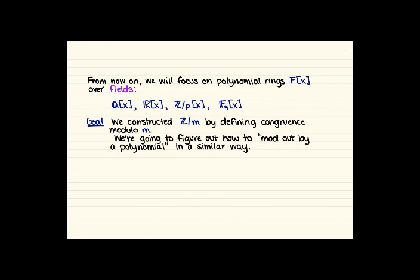We've introduced polynomial rings over rings in general, but from now on we're going to focus on polynomial rings F adjoin x over fields. In particular we'll be looking at Q adjoin x, R adjoin x, Z mod p adjoin x, and something called Fq adjoin x. We'll say what Fq is on Wednesday — that's the finite field we'll talk about. These are the fields where we'll be taking the coefficients of our polynomials.